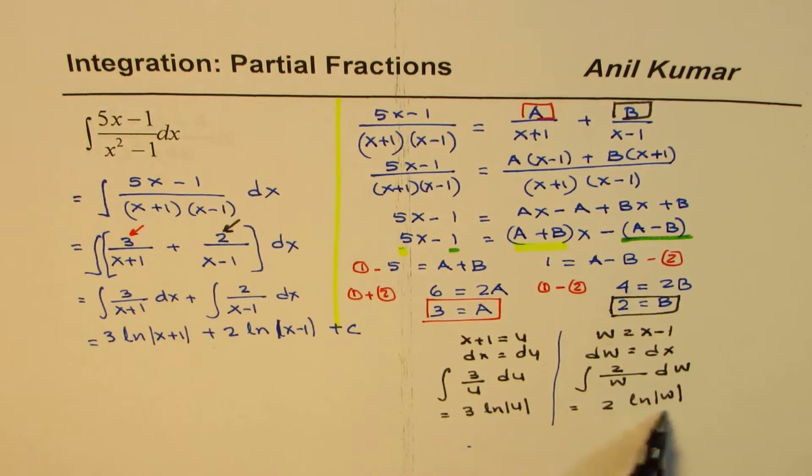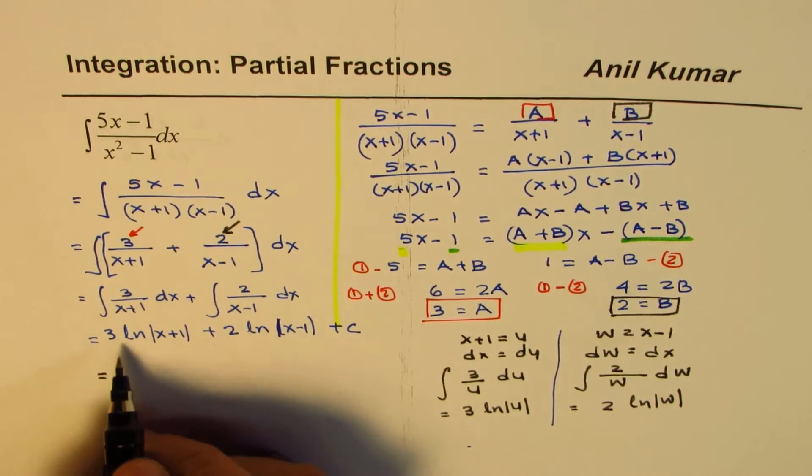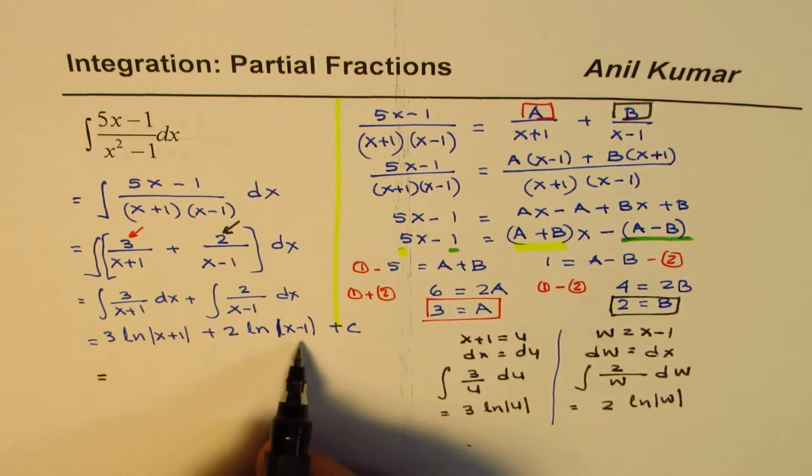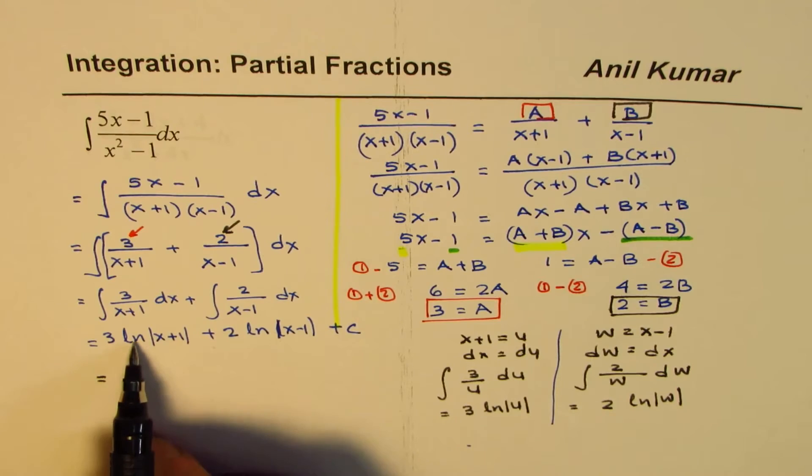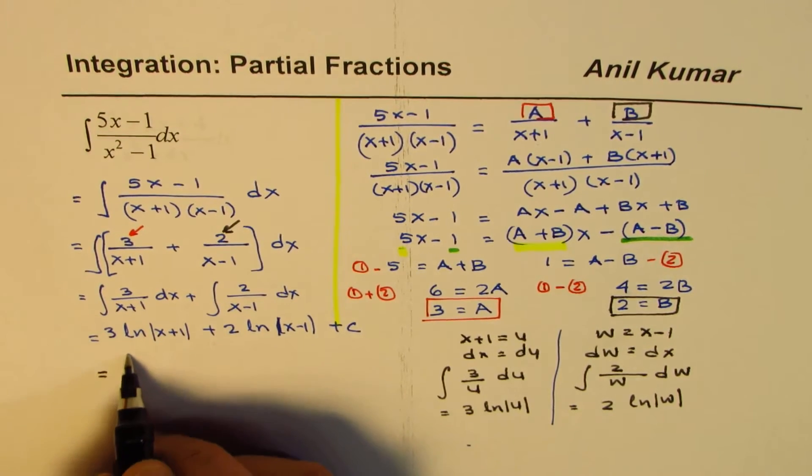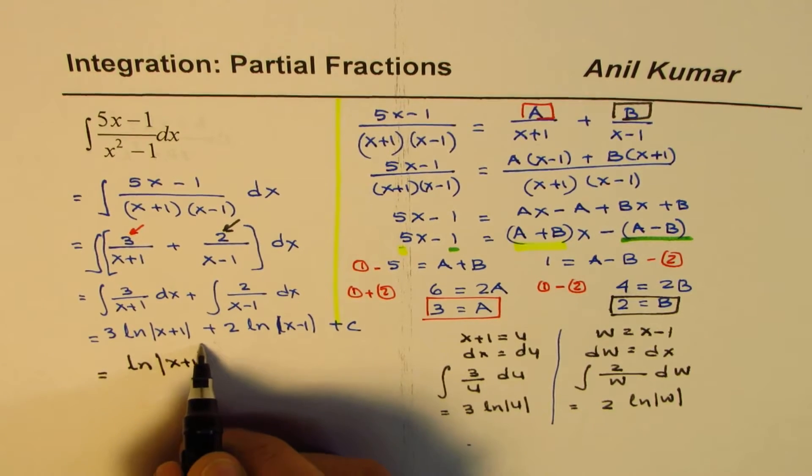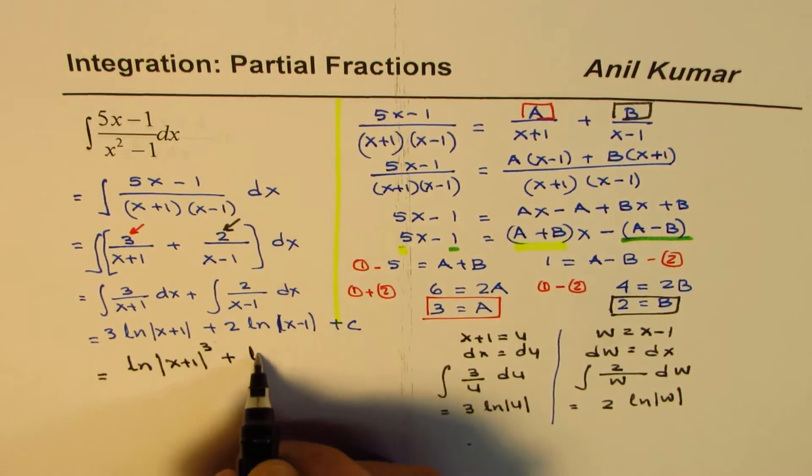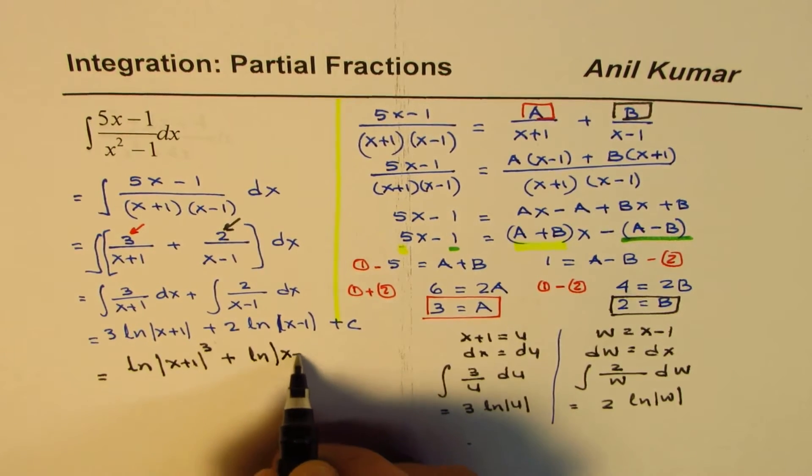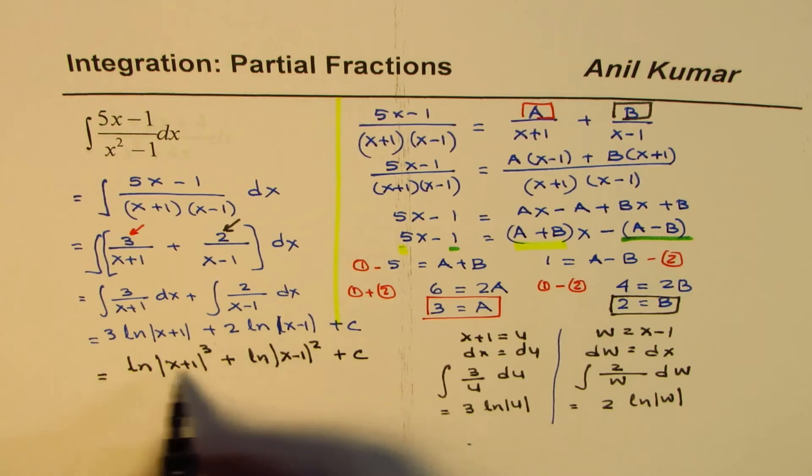And that is equals to 2 times ln w, and then add c. And then replace u and v by the functions. So clearly, we have our answer, which is like this. Now, what you can do is you can actually combine them. So let's combine them.